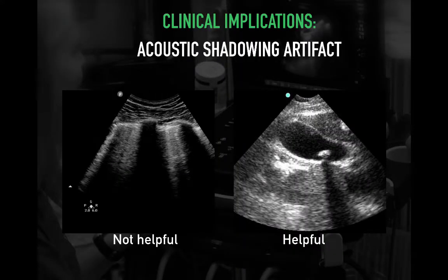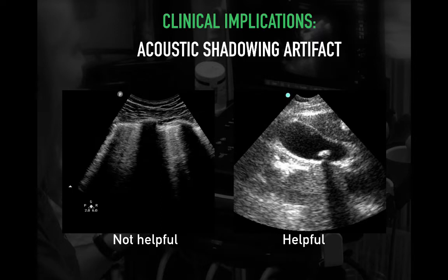Acoustic shadowing is largely unhelpful below ribs, but it does help you identify the bat sign, describing the rib-pleural-rib interface. On screen right, we can see a gallstone in the gallbladder and acoustic shadowing beneath — those sneaky buggers are pretty high attenuators. Also, central line catheters can be recognized readily with sonification.